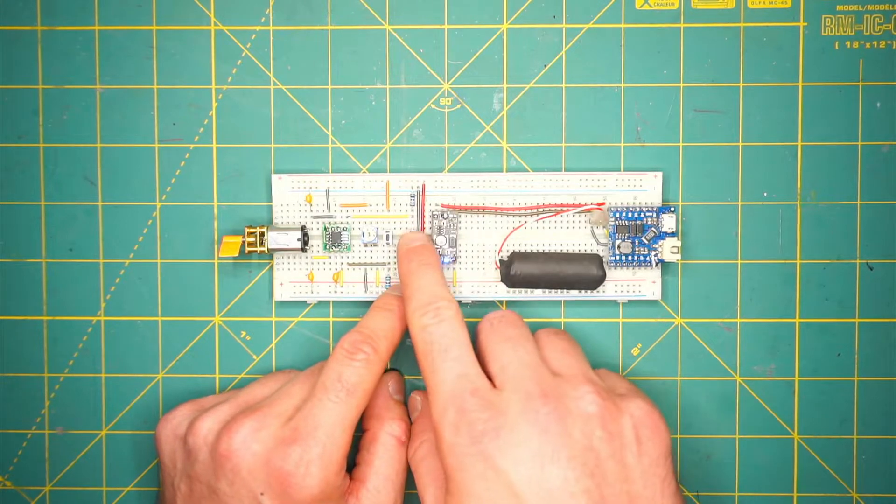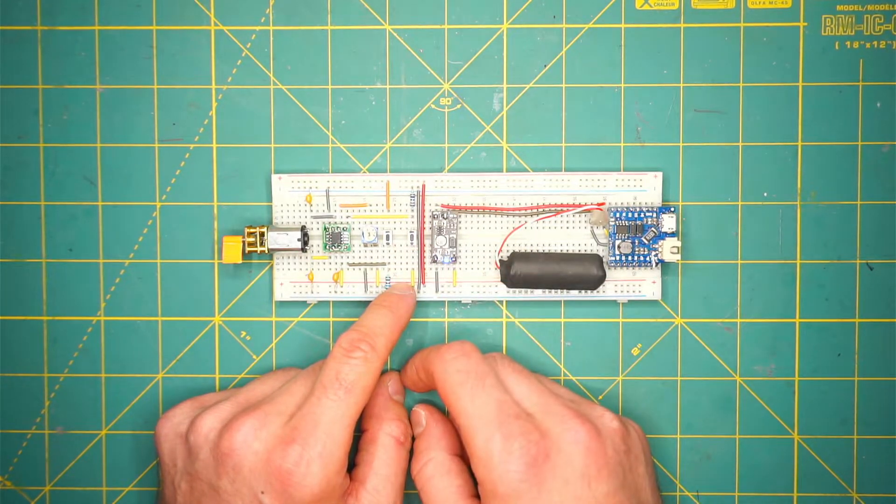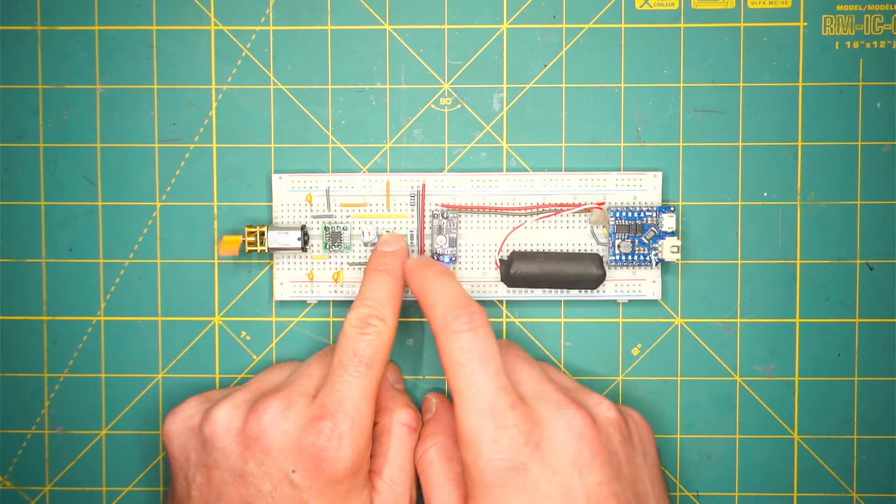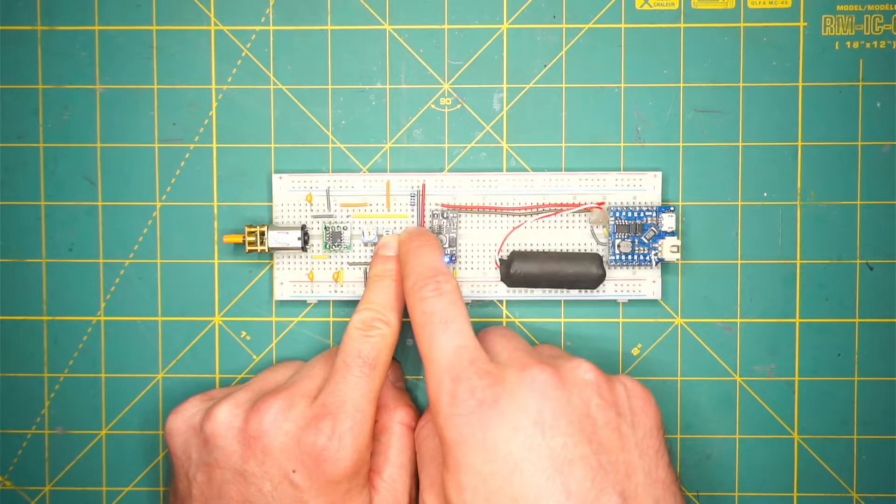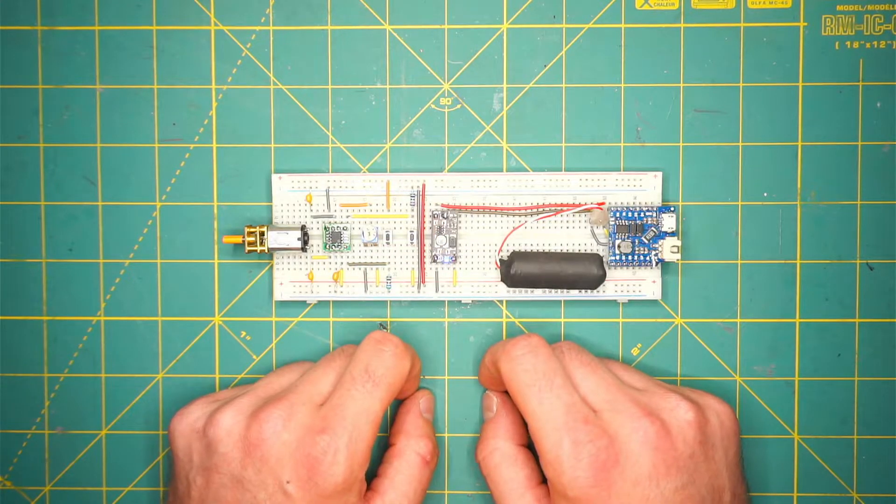When I release the button, it spins for some time. But if you push the two buttons together, it immediately stops. This is a function of the IC called brake.